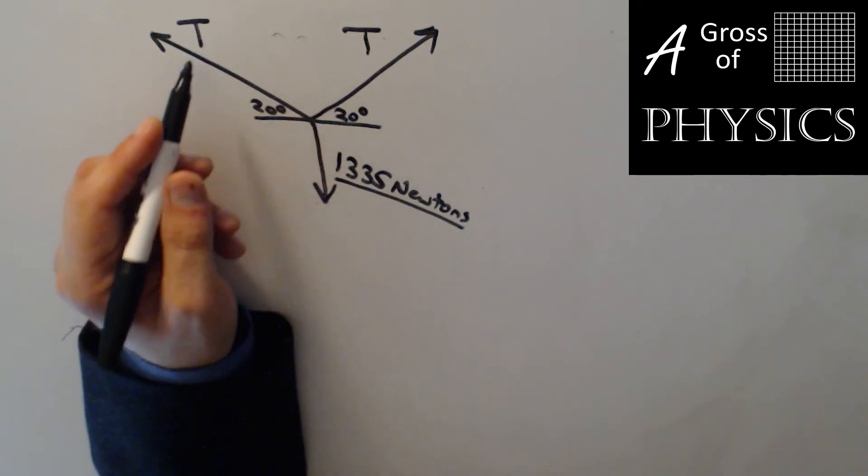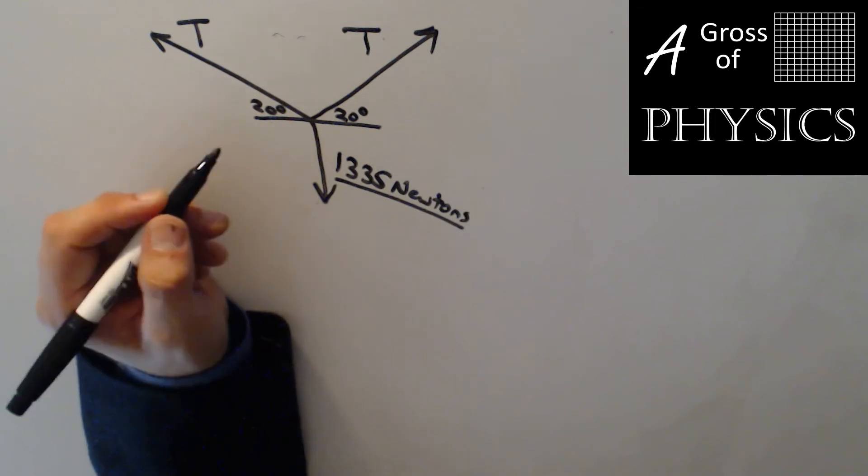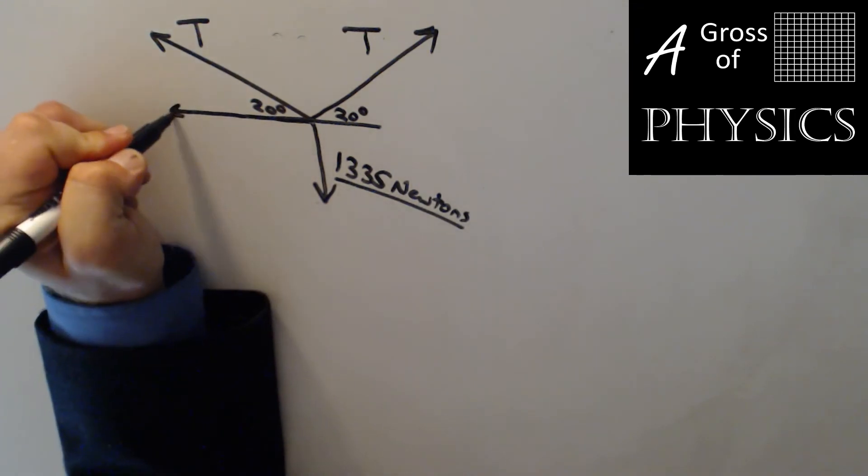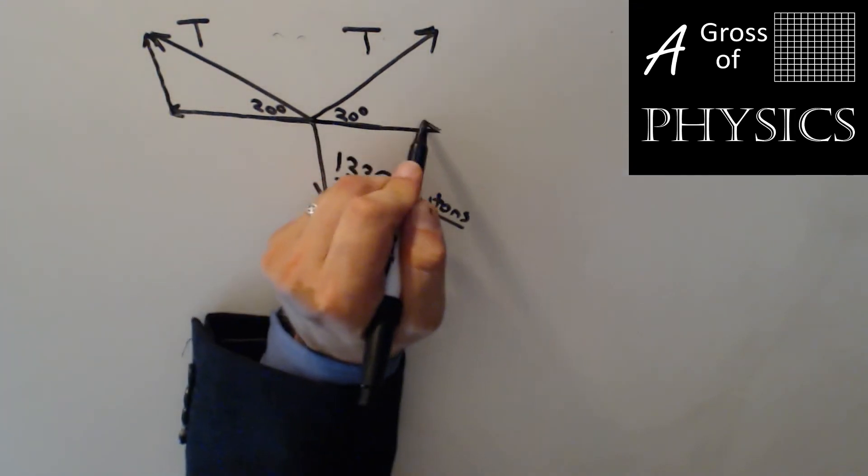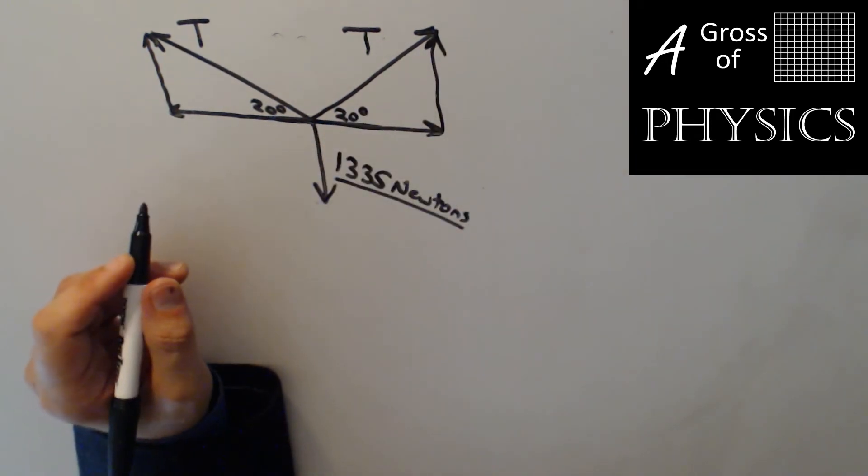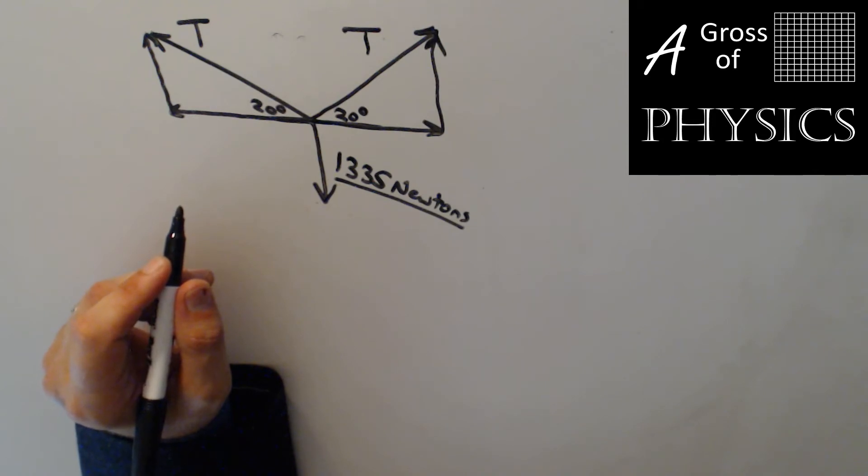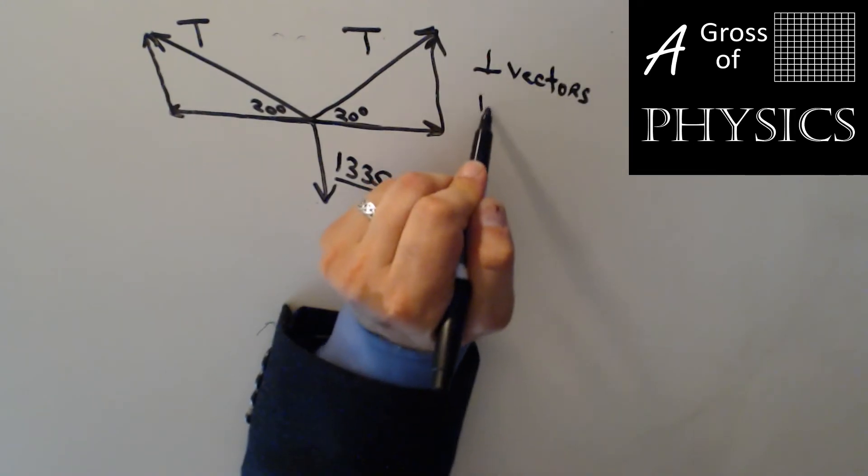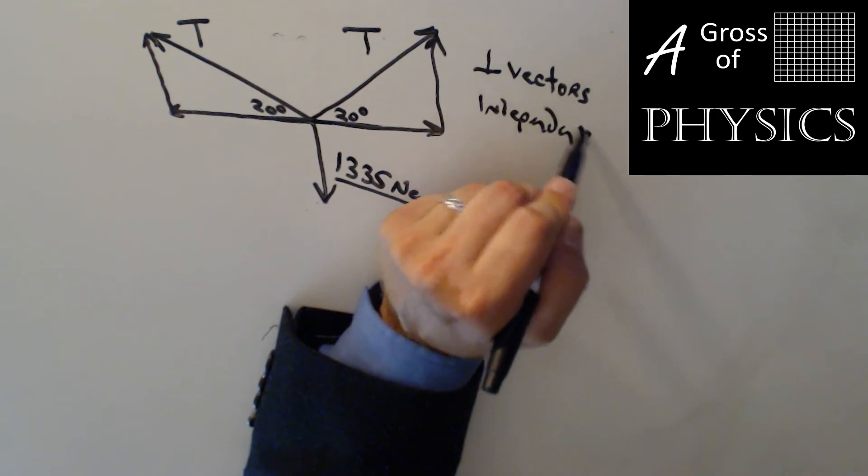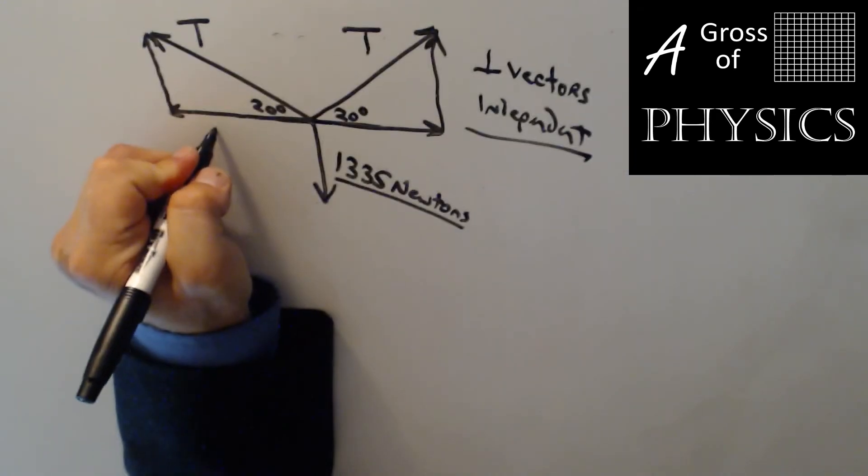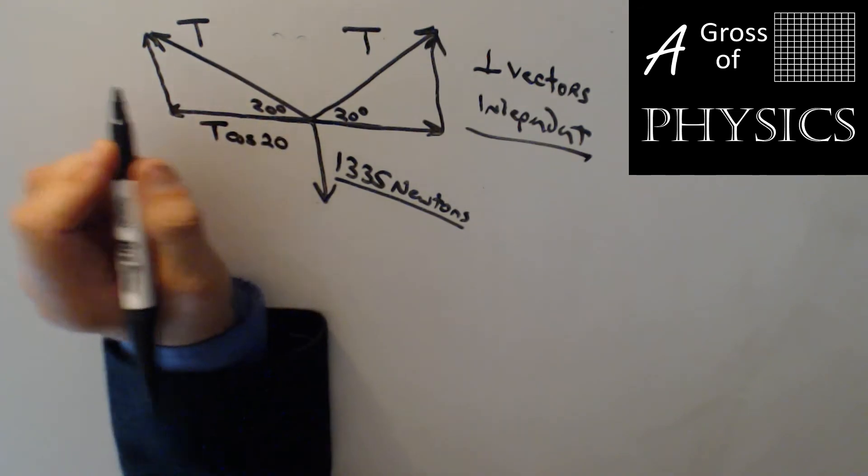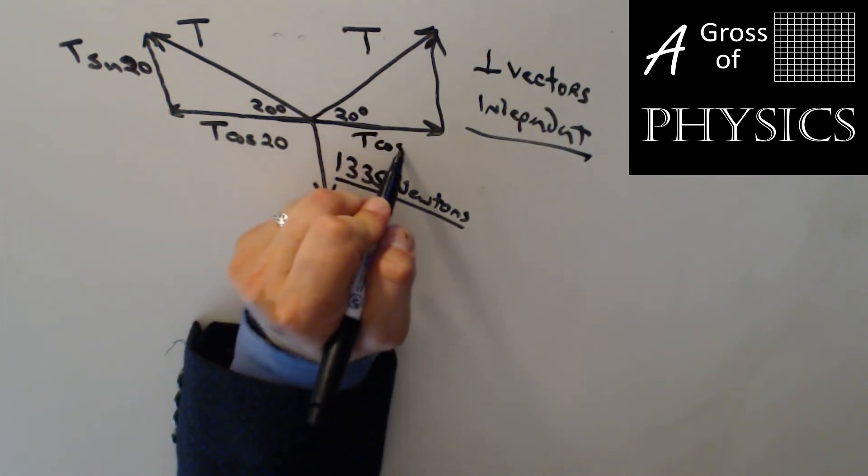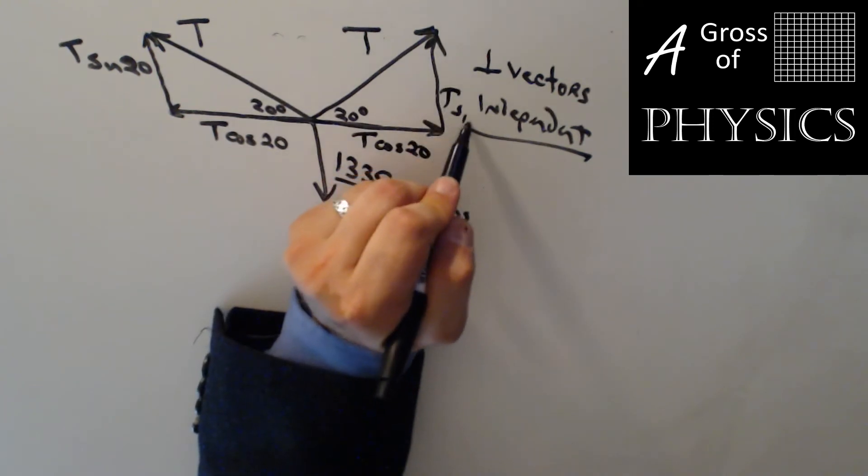So in this case I can call it tension and tension because they're the same value. We could also call it vector one and vector one or a and a or something like that. But these t's are unknown. So what we're going to need to do is the same concept that we do for any mathematical vector problem. We need to break the legs and force them to be perpendicular because remember perpendicular vectors are independent. So in order to get the x I would do t cos 20 t sin 20 for the y and the same on this side t cos 20 t sin 20.